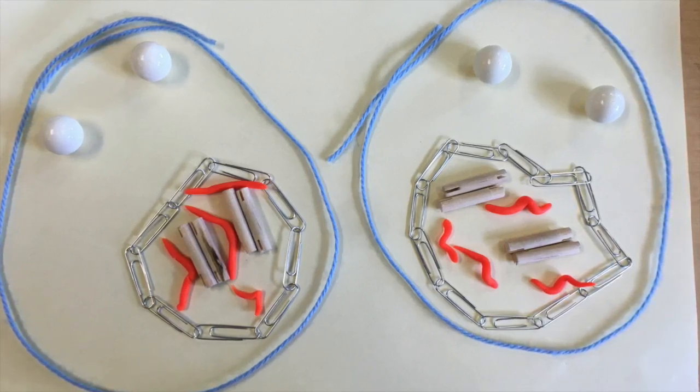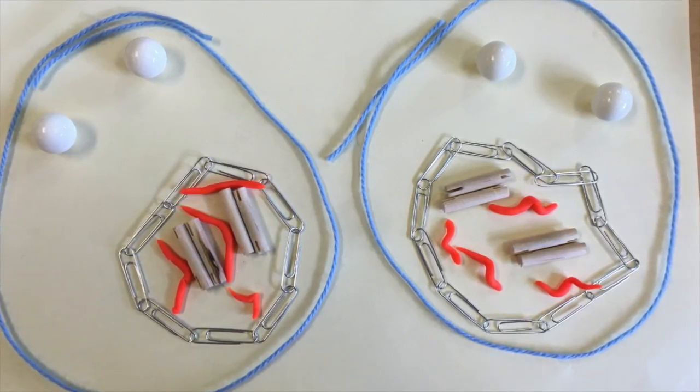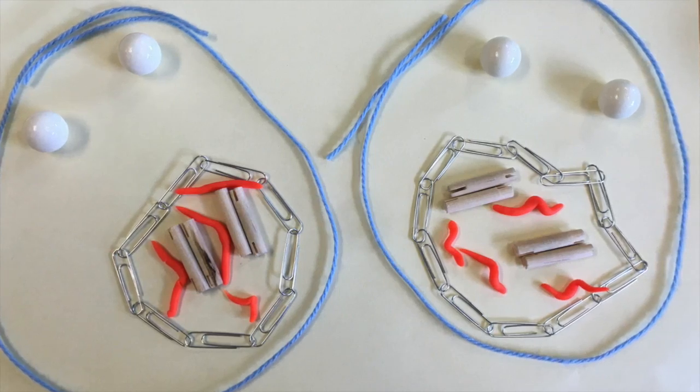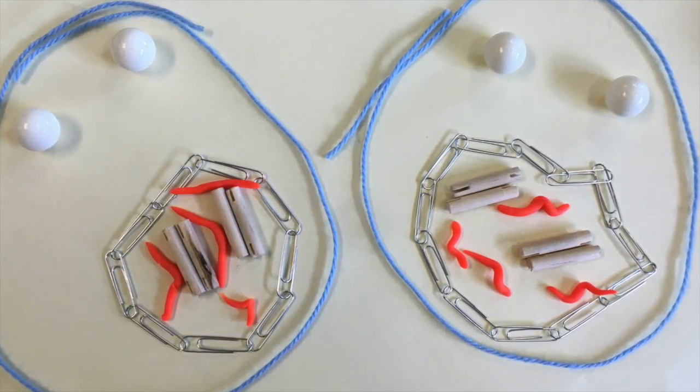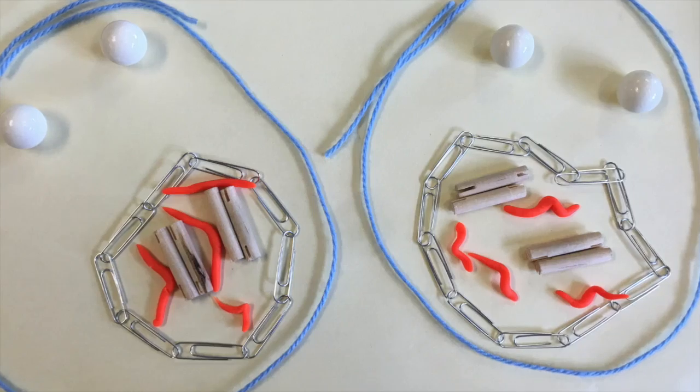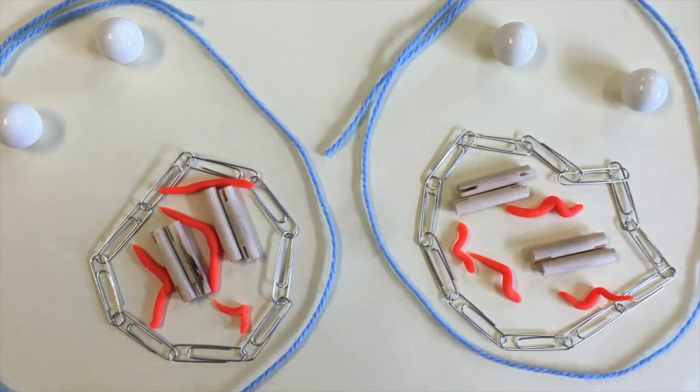Cytokinesis is when the cell divides and becomes two daughter cells. This occurs when the middle of a cell is pinched by a ring of protein, and the chromosomes move into the cells to create two daughter cells. The cell divides and two new cells are formed.